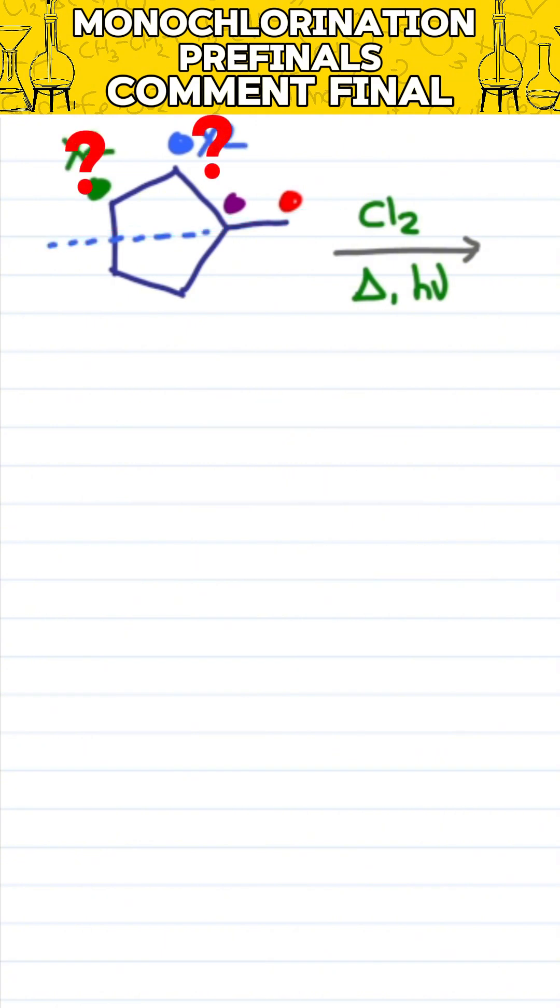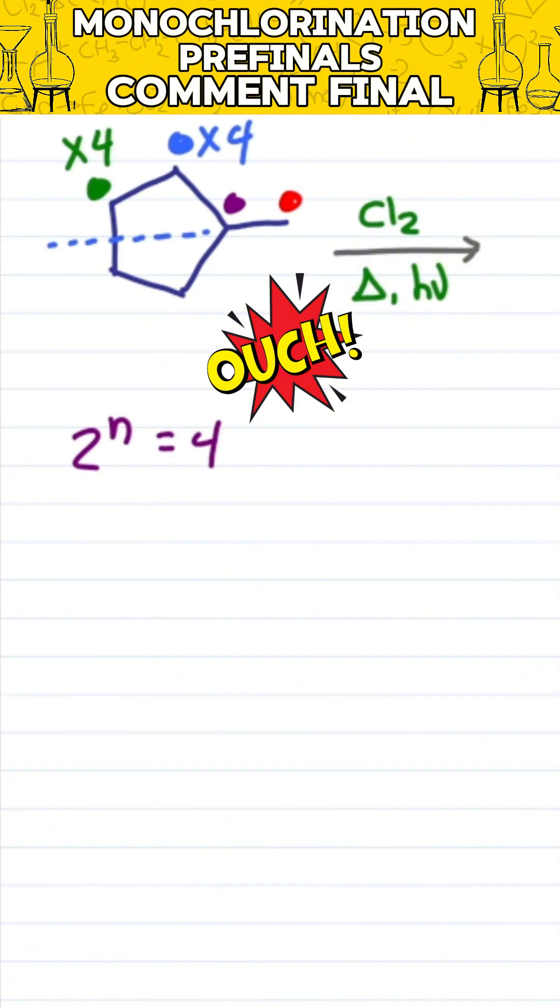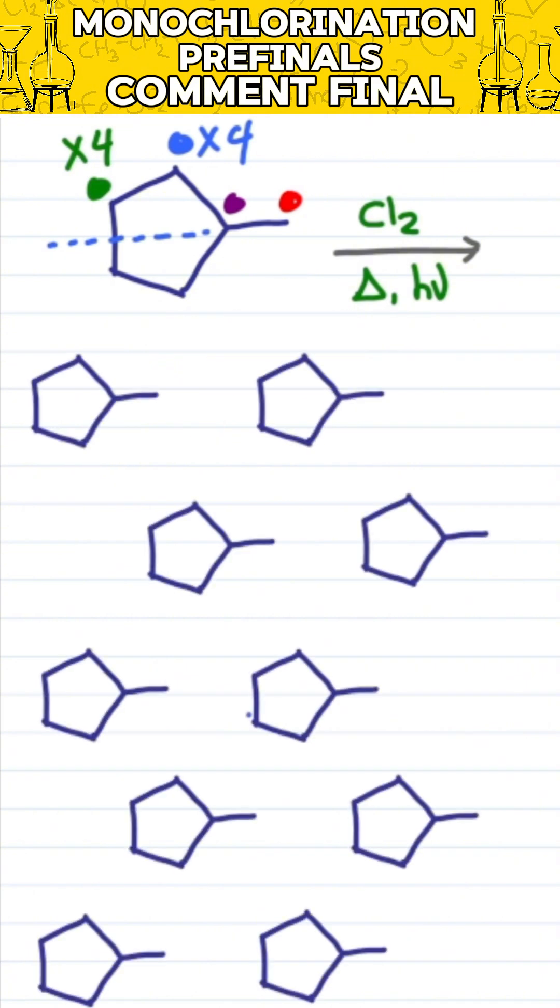Or is it only two? Two stereocenters gives me four options because both chiral groups can have R and S, giving me four for each. Ouch! Are you ready? So we need ten skeletons.